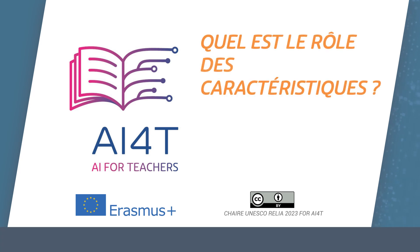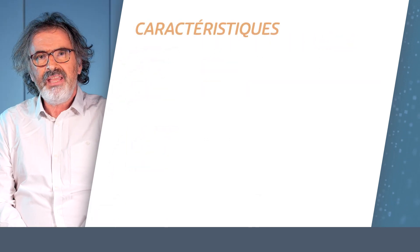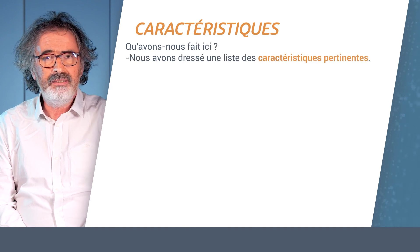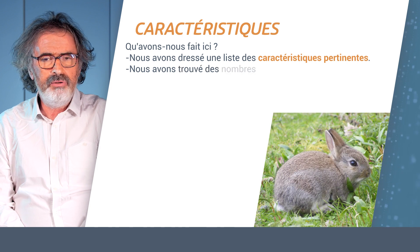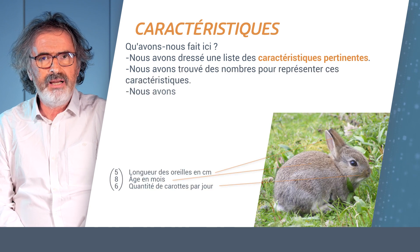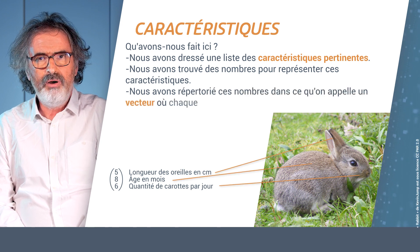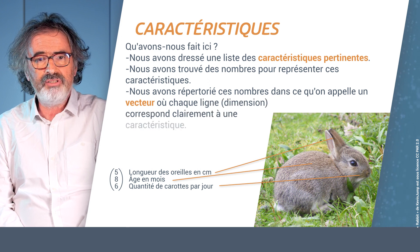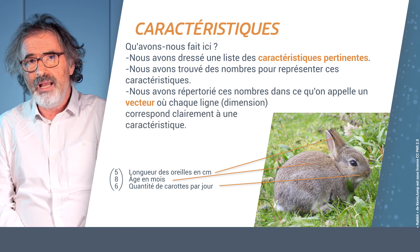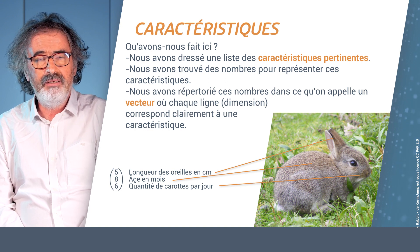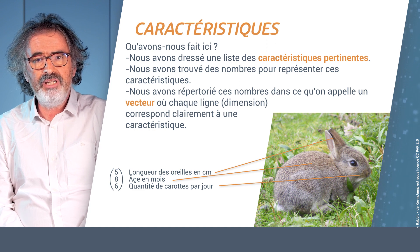Between the many objects in machine learning, features are especially important. Features are things that we can measure. Suppose we are trying to classify rabbits — we look at rabbits and try to find measurable parts of the rabbit. For example, the length of the ears, or the age in months, or the quantity of carrots per day. Thanks to that, our rabbit has been replaced by a vector, a list of numbers — one number for each of the features.